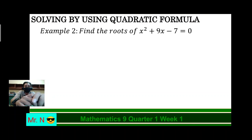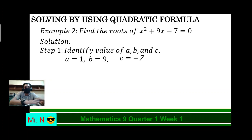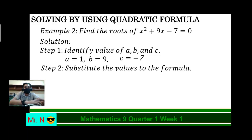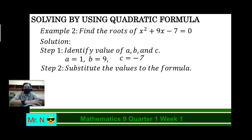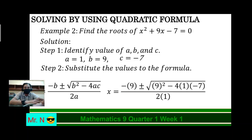So, let's have example number 2. Find the roots of x² plus 9x minus 7 equals 0. Once again, identify the value of A, B, and C. A is equals to 1, B is equals to 9, and C is equals to negative 7. Now, substitute the values into the formula: negative B plus or minus square root of B² minus 4AC, all over 2A. We're going to substitute: B is 9, A is 1, C is negative 7. So we have negative 9 plus or minus square root of 9² minus 4 times 1 times negative 7, all over 2 times 1.